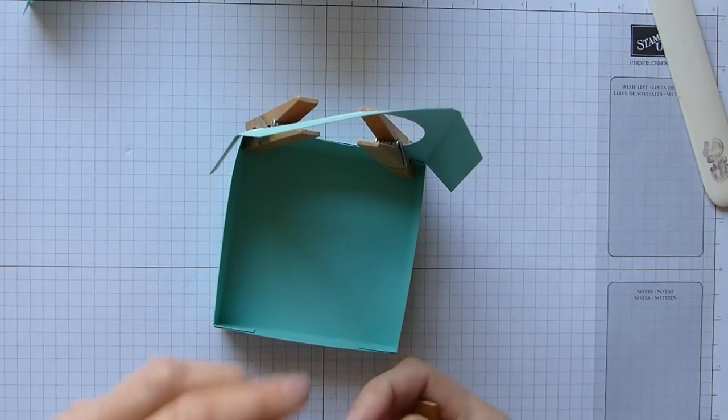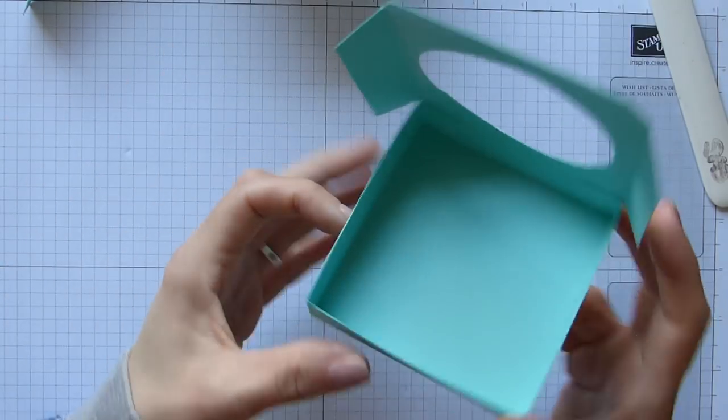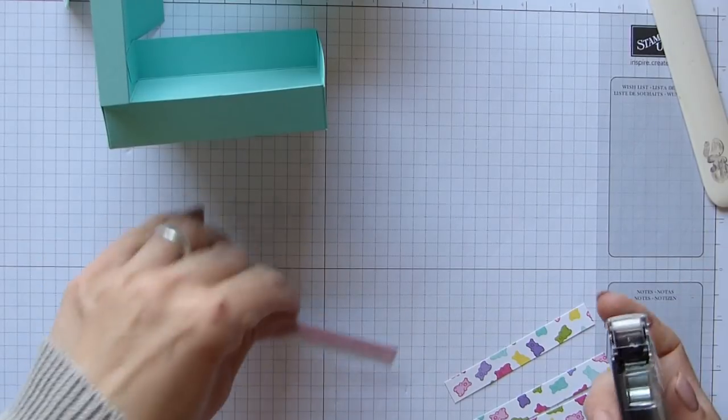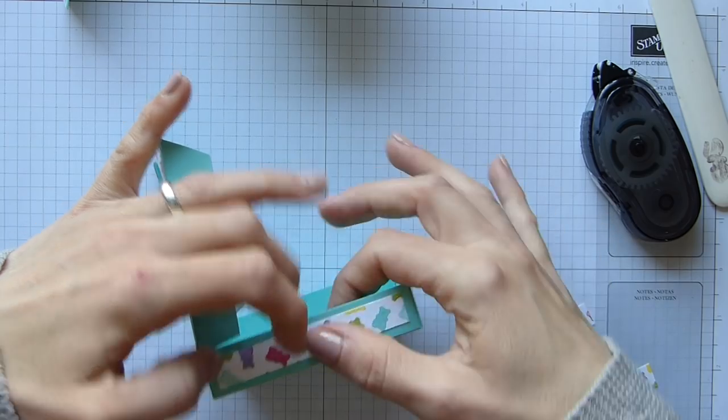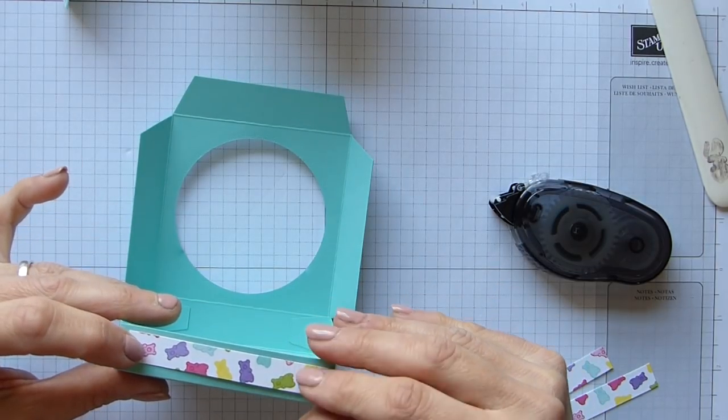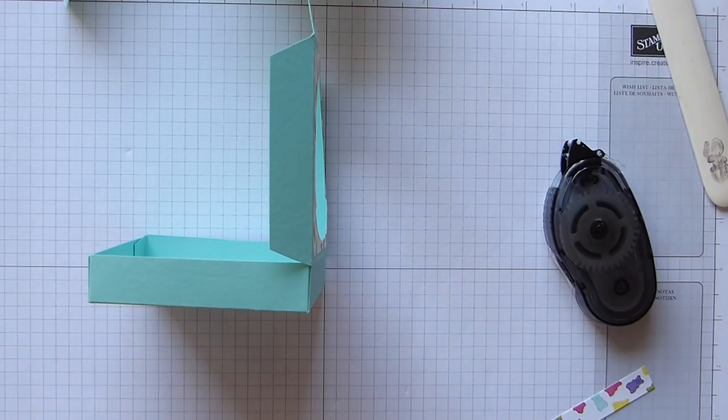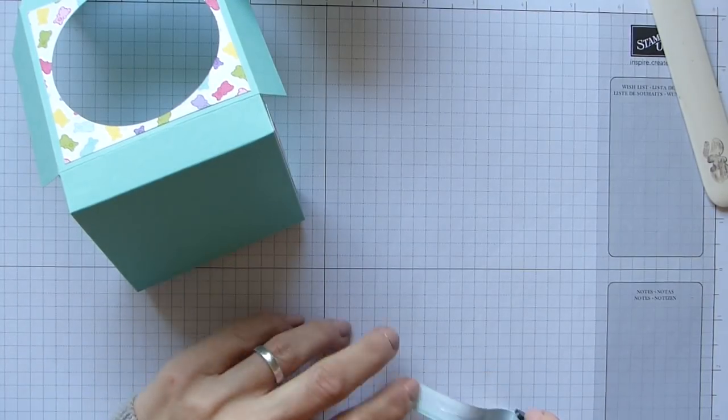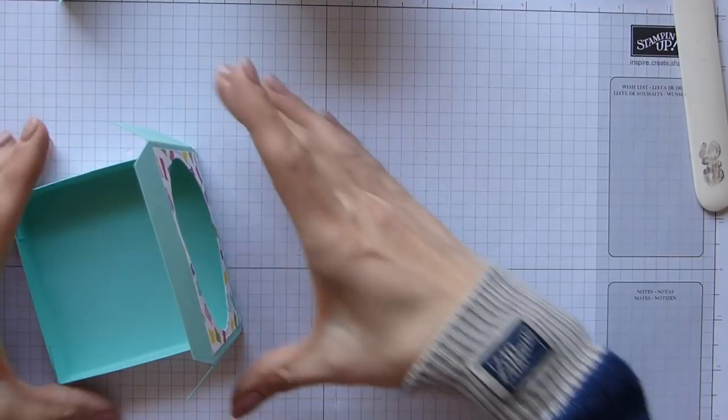Okay back to our box. Take these ridiculously sized pegs off now that everything is held together. So our box is now made up, so now we have to pop our DSP panels on the sides. These are half an inch by one and three quarters, or 1.5 centimetres by 8 centimetres, and I'm just literally popping those on the front, back and sides. I love these jelly bears, I think they're so cute.